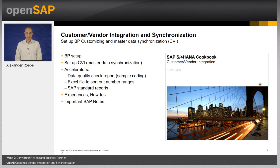To conclude this unit, I want to highlight the CVI Cookbook, which is publicly available. It covers almost all the information I provided during this session with more detailed information on the main steps and considerations. It comprises how to set up Business Partner and important settings for CVI. It provides some accelerators, like an Excel spreadsheet to analyze existing number ranges and derive Business Partner numbers, and it points out some helpful standard reports. The cookbook is available in the SAP Help Portal, and the link is attached to the picture. Thanks for listening — we have finished Unit 6: Customer and Vendor Integration and Synchronization. In the next unit I will proceed with tips and tricks for Business Partner synchronization from several projects. Thank you and see you in the next unit.